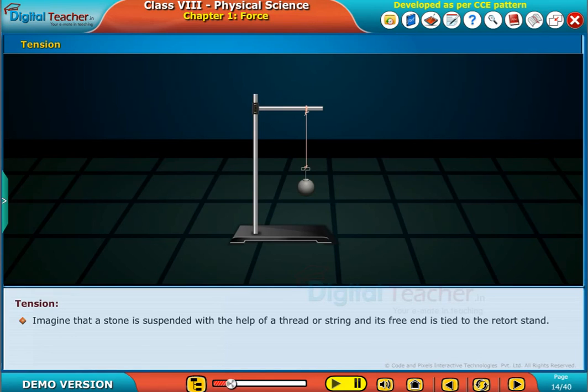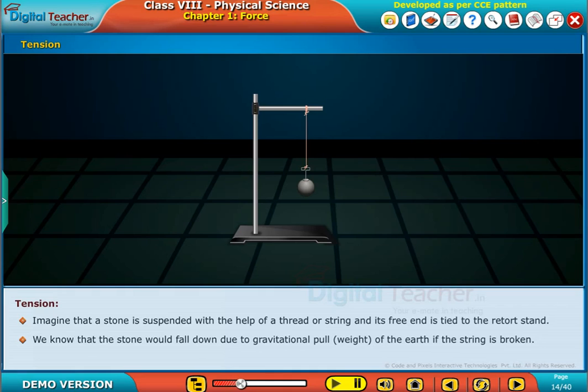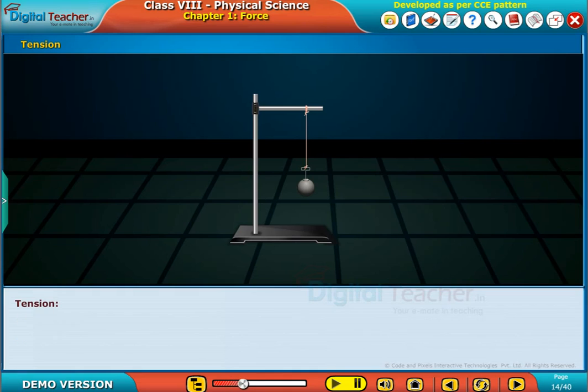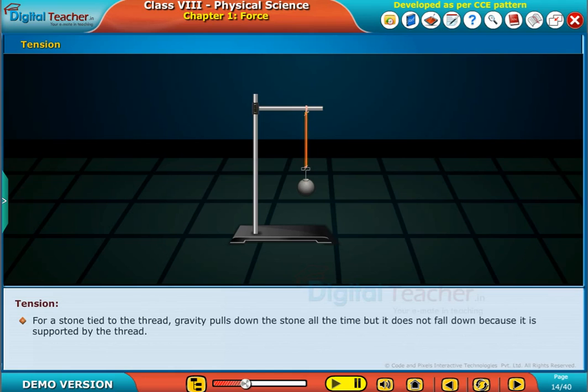to the retort stand. We know that the stone would fall down due to gravitational pull or weight of the stone if the string is broken. For a stone tied to the thread, gravity pulls down the stone all the